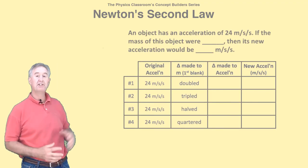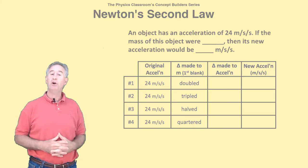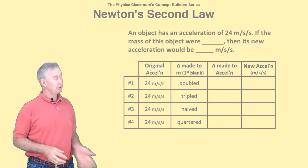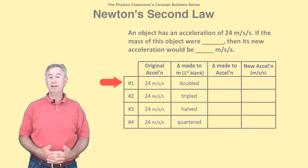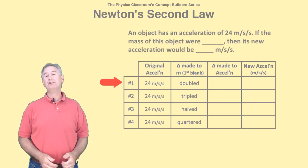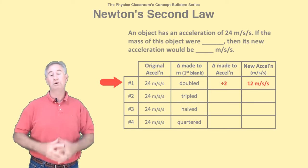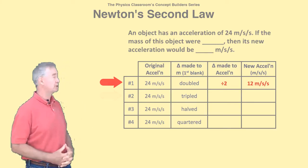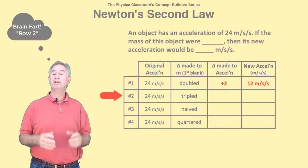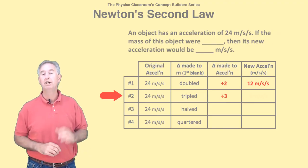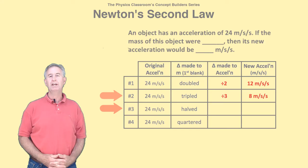Let's practice. In these problems, the mass is being changed and we need to find the resulting acceleration. Once more, we need a multiplying or dividing factor. We'll use the table to organize our solutions. In row number one, M is doubled, that is multiplied by two. Since M is becoming larger, A must become smaller. We need a dividing factor of two. 24 divided by two is 12 meters per second per second. In row two, the M is tripled, so we need to make the acceleration smaller by dividing by three. 24 divided by three is 8 meters per second per second.